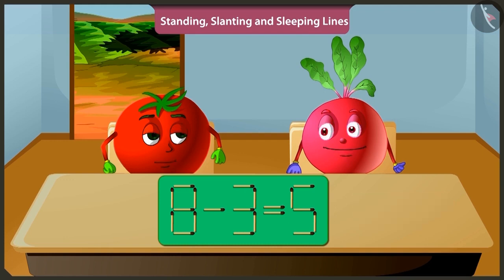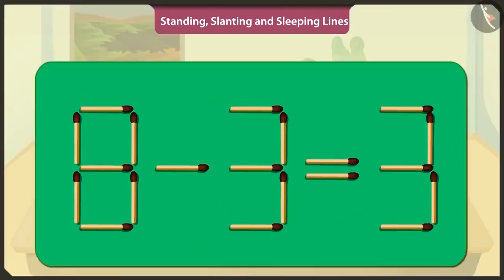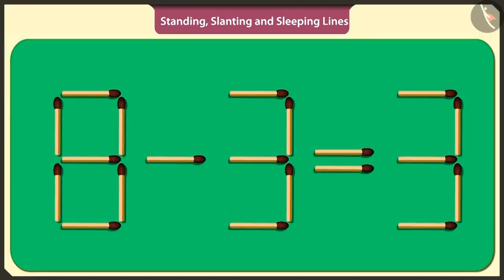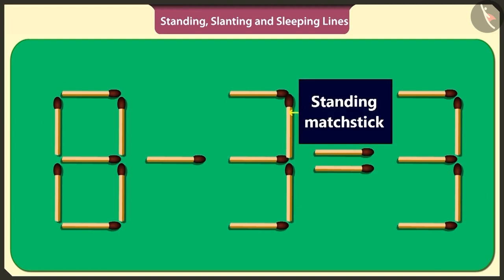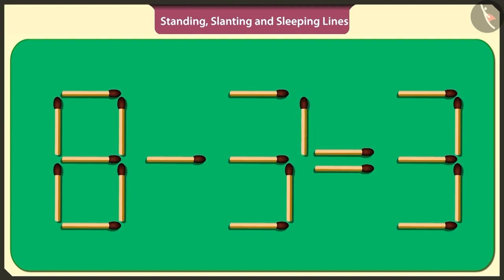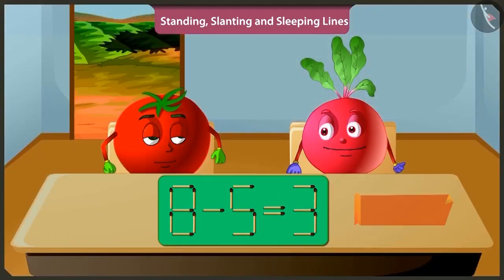Bittu, there is another way to solve this puzzle. What's that? Look. Now out of the subtracted number three in this puzzle, by removing this standing matchstick and placing it vertically here, then three is converted to five and thus the puzzle will be solved. Oh, yes. When we subtract five from eight, we get three. This is fun.